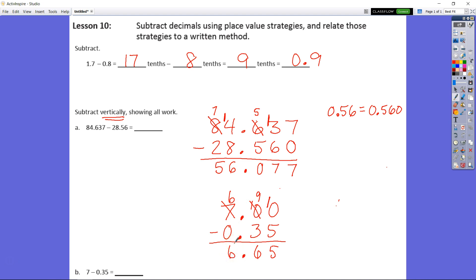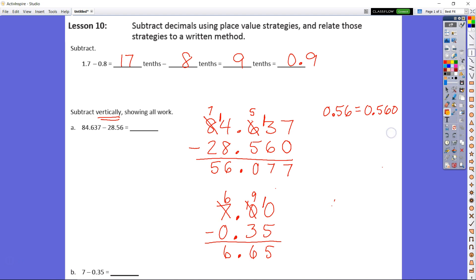Alright so remember a couple things here. If you didn't notice make sure that you are lining your place value units up. So here I have all of my hundredths lined up, all of my tenths lined up, my decimals are lined up and I have my ones lined up. Same thing up here on this top number I have my thousandths, I have my hundredths, I have my tenths, I have my ones and I have my tens.